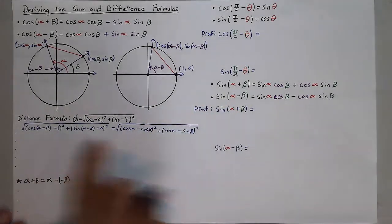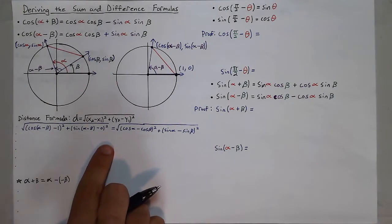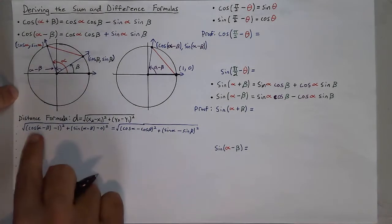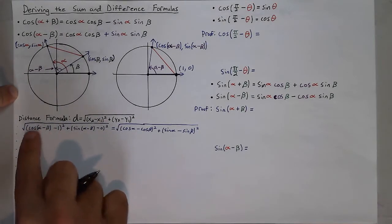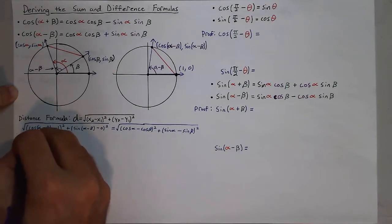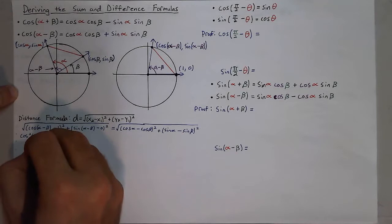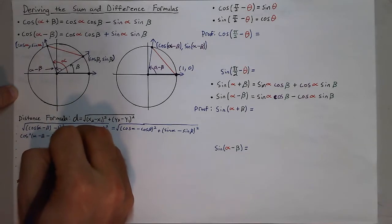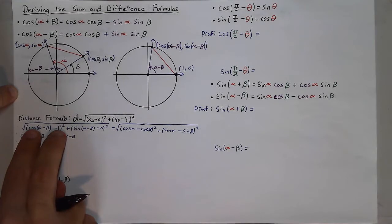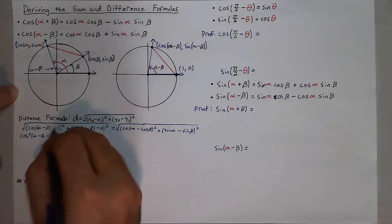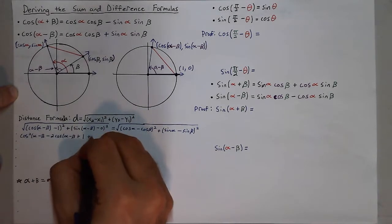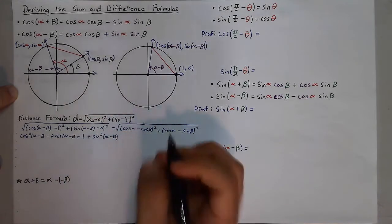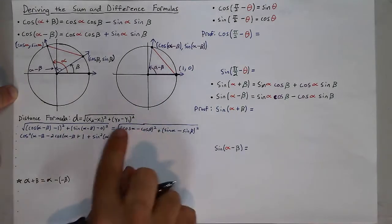These two expressions are equal, and if I go through and start to simplify I'll eventually end up with one of these formulas. First I'm going to square both sides and expand the expressions. When I square the left side I get cosine squared of alpha minus beta, minus 2 cosine of alpha minus beta times 1 — it's a perfect square trinomial — plus 1 squared, plus sine squared of alpha minus beta.